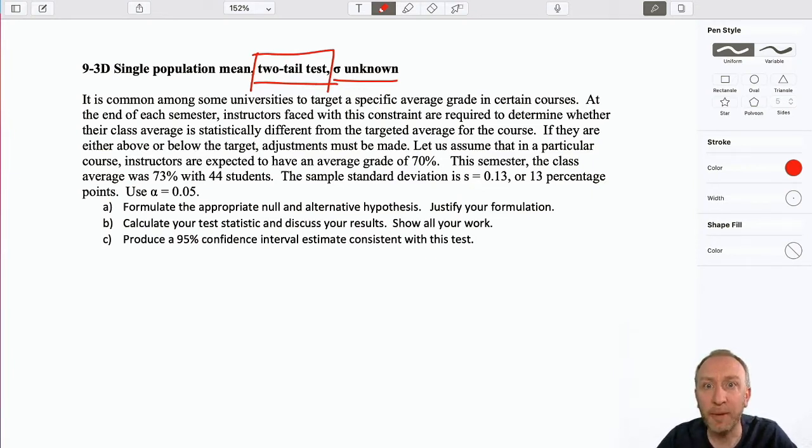Okay, so it's common in some universities to target a specific average in certain courses. At the end of each semester, the instructors faced with this constraint are required to determine whether their average is statistically different from the targeted average for the course. If they're either above or below, we have to make some adjustments.